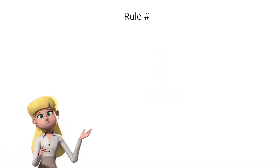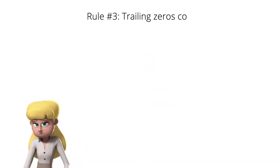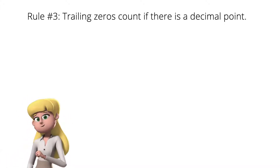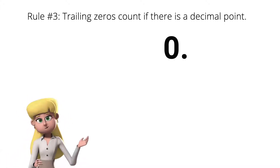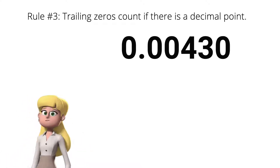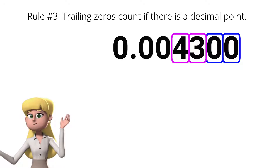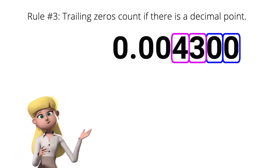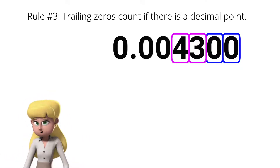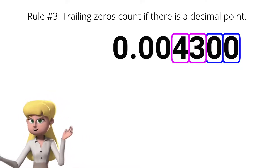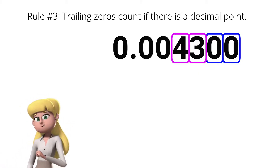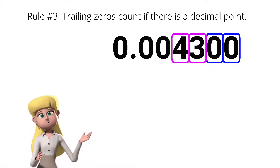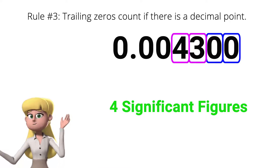Rule number 3: trailing zeros count if there is a decimal point. If I have 0.004300, the zeros located at the tail of the value are considered significant. So for this value, we have 4 significant figures.